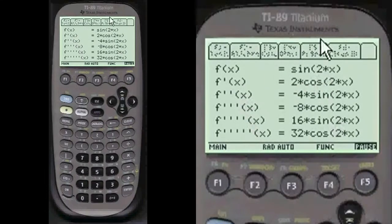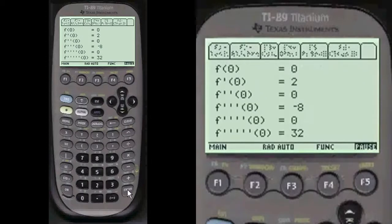This is the first five derivatives of sine of 2X. And then we're going to put zero in here for X and work the derivatives with that. Here's the answers here.